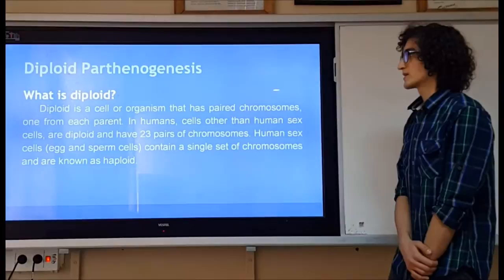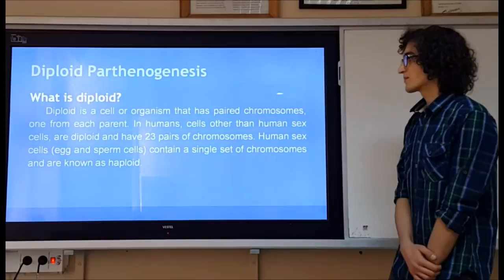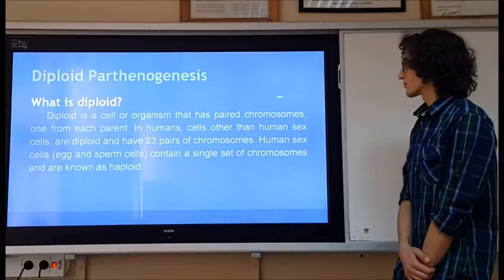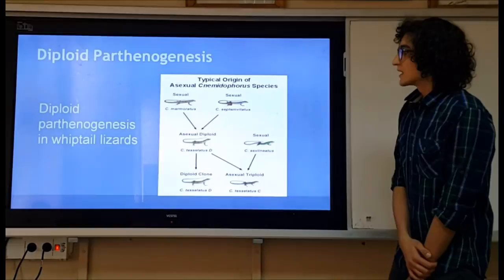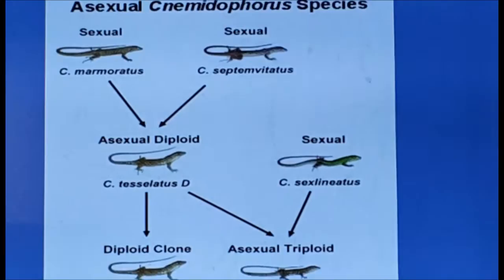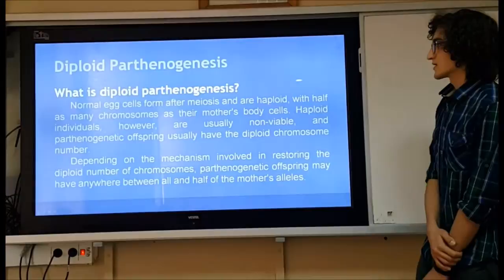Diploid parthenogenesis: a diploid cell or organism has paired chromosomes, one from each parent. In humans, cells other than sex cells are diploid and have 23 pairs of chromosomes, while human sex cells contain a single set of chromosomes and are known as haploid. Diploid parthenogenesis is notably seen in whiptail lizards.